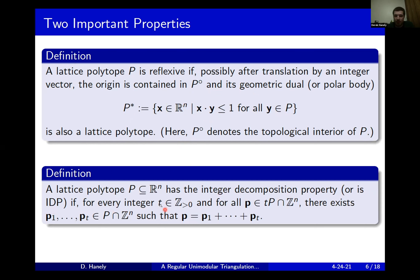A lattice polytope is said to satisfy the integer decomposition property, or IDP, if for every positive integer t and for any integral point in the t-th dilate of the polytope — where the t-th dilate means you take every point inside the polytope and multiply by t — there exists a set of exactly t integral points in the original polytope whose sum equals that arbitrary point in the t-th dilate. Proving this property in general is quite challenging, but we're looking at a specific class of simplices because we have a nice characterization of when they satisfy the IDP property.